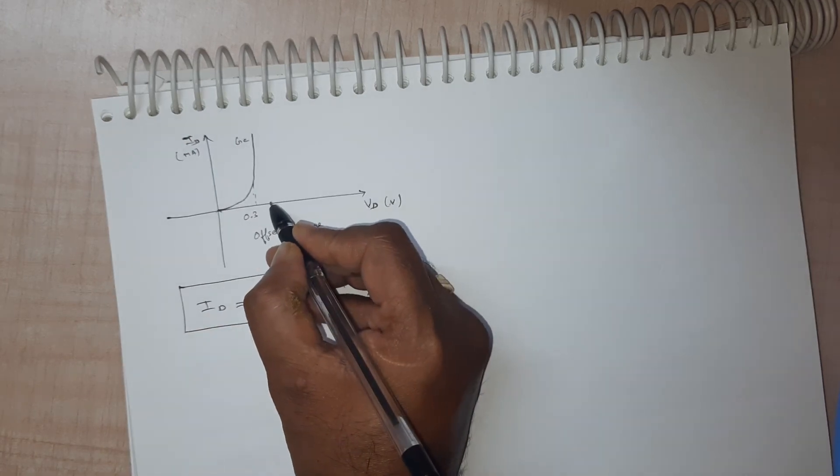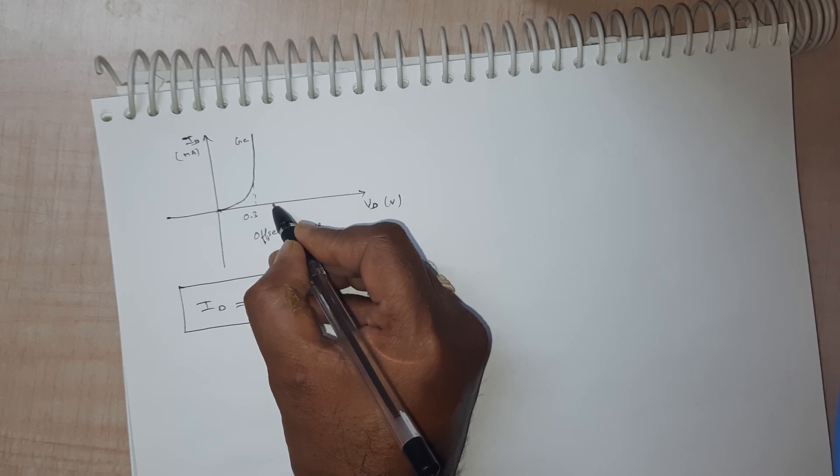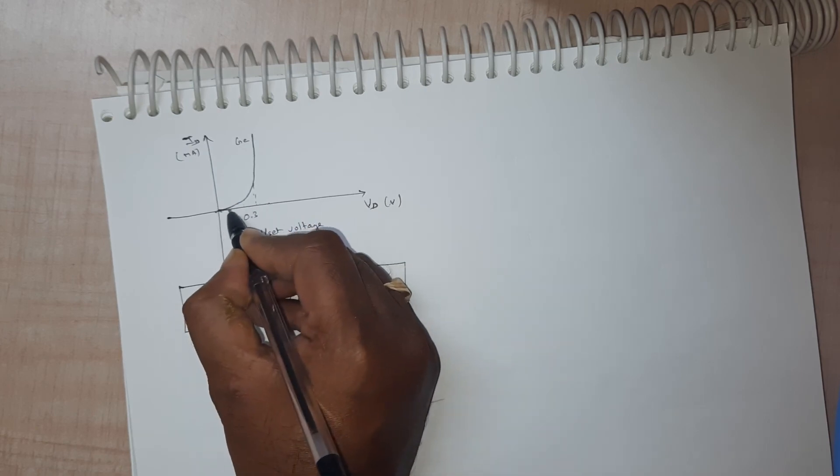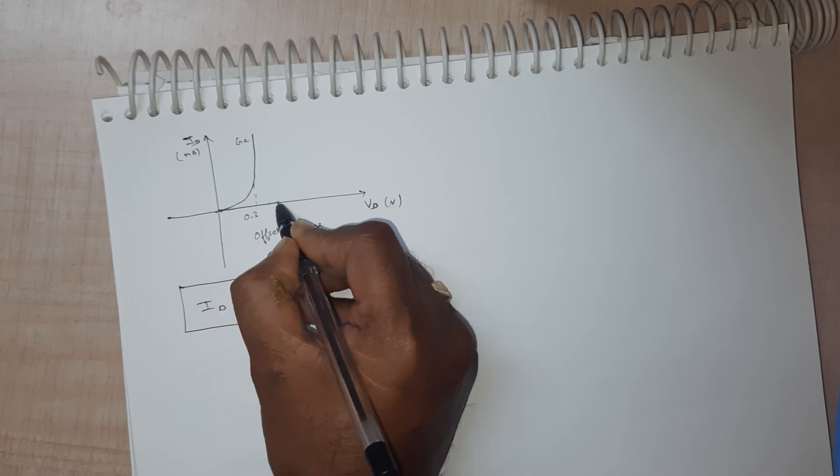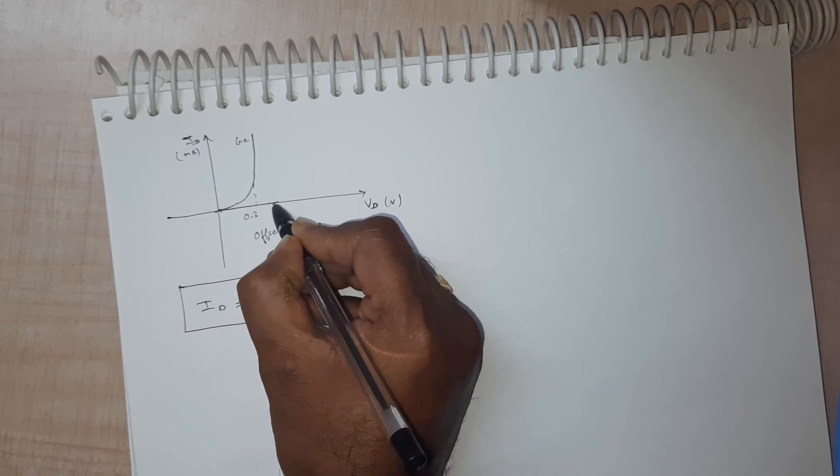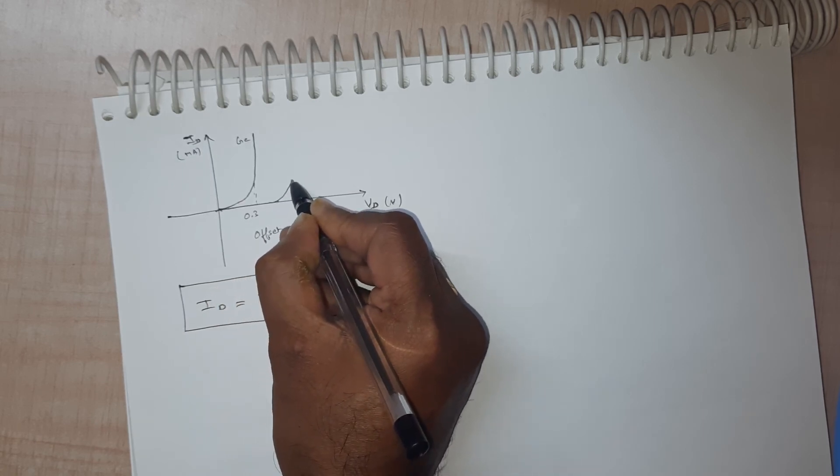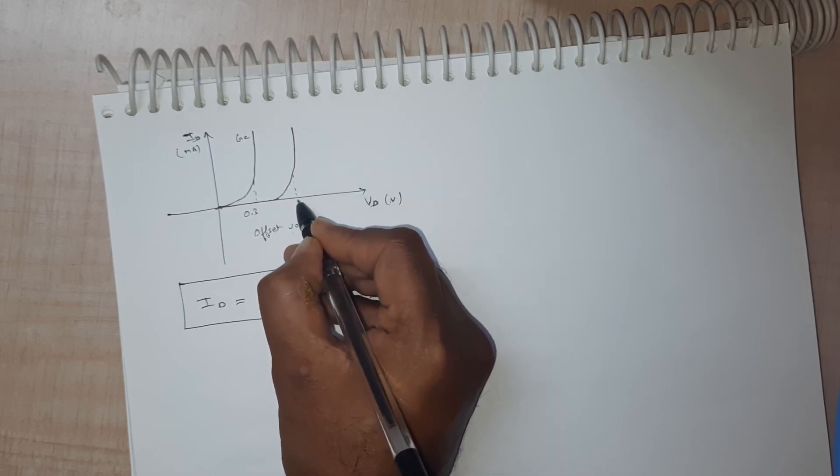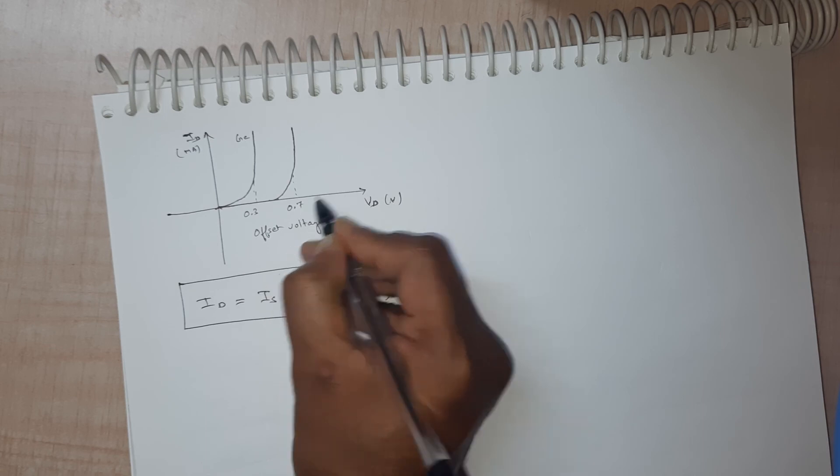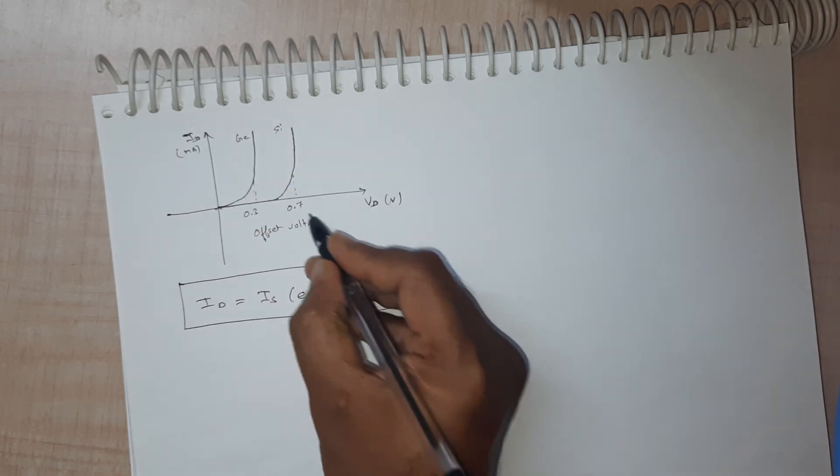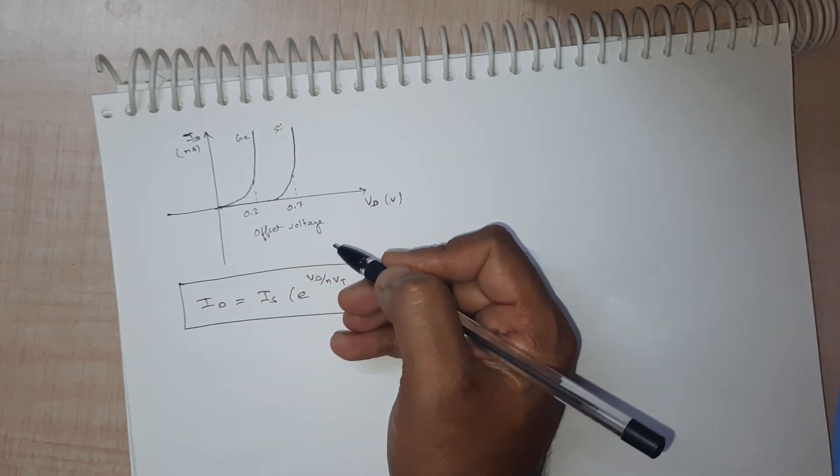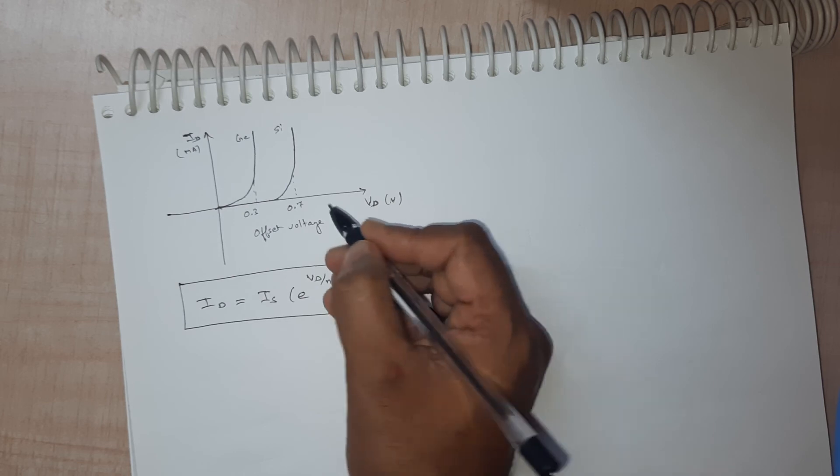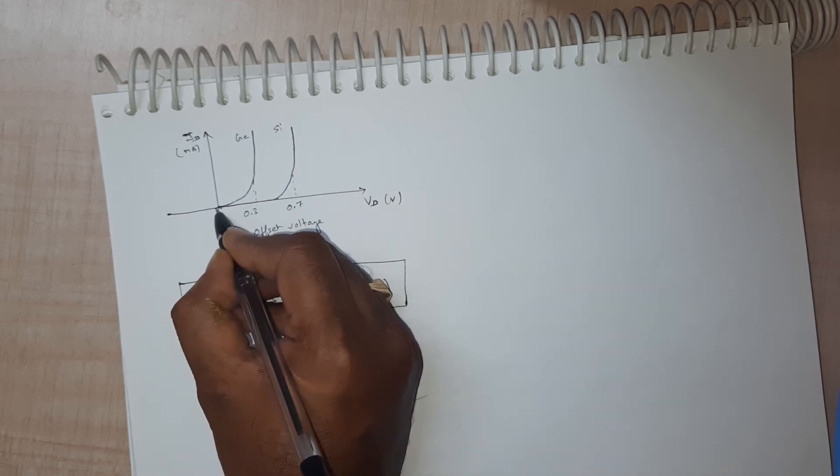And for another type of material that is silicon, even though you increase the applied voltage, the diode current will not start increasing after a certain cutoff voltage or offset voltage at 0.7 volts. So for silicon material diode the offset voltage is 0.7 volts.